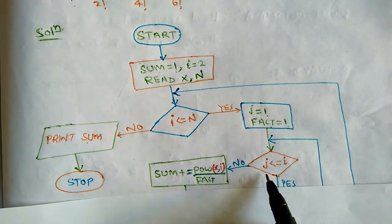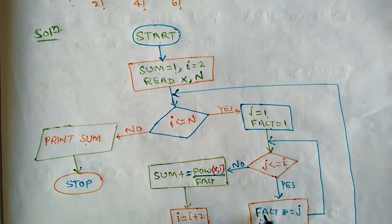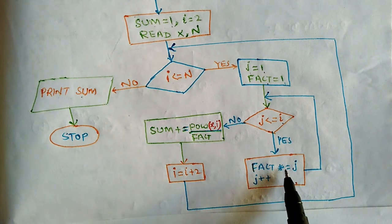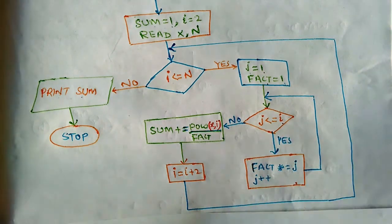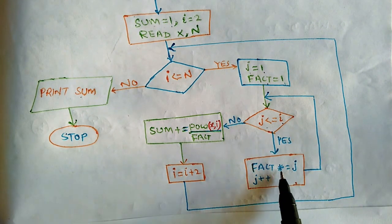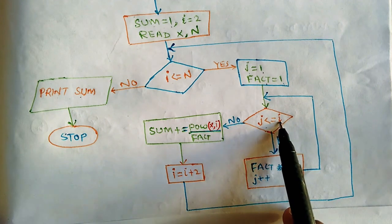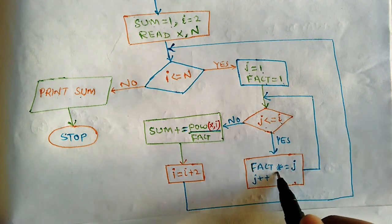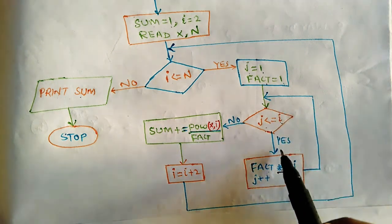We check the condition: is j less than or equal to i? For example, if you have 5!, it is 1 × 2 × 3 × 4 × 5. So j starts and we find i factorial. It is initialized as 1, and then j increments. The condition checks if j ≤ i; if true, we use a shorthand assignment: fact = fact * j. The value of j increases until the factorial is fully calculated.